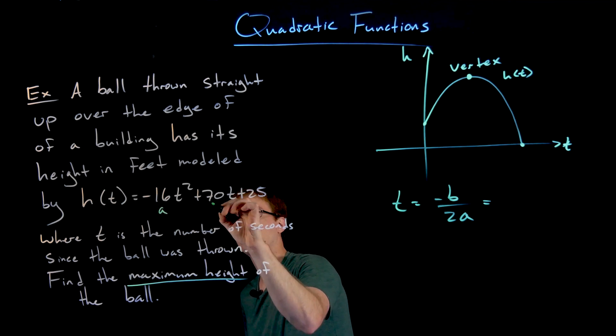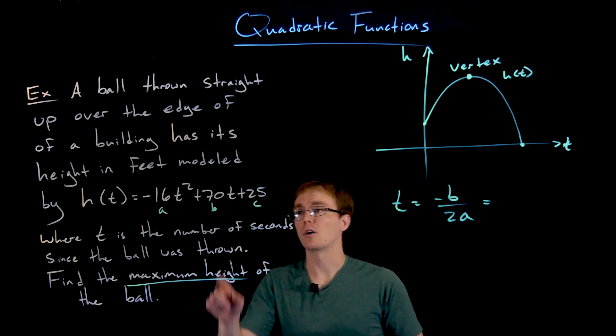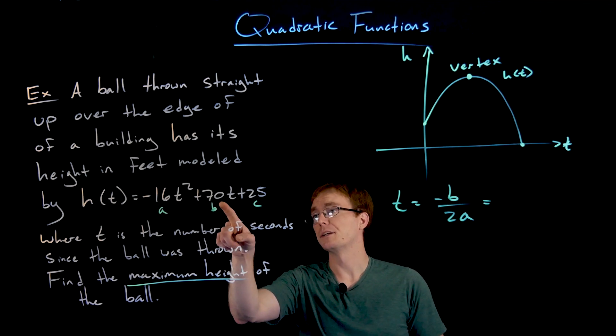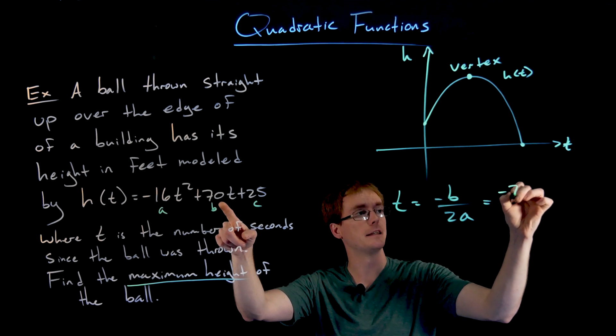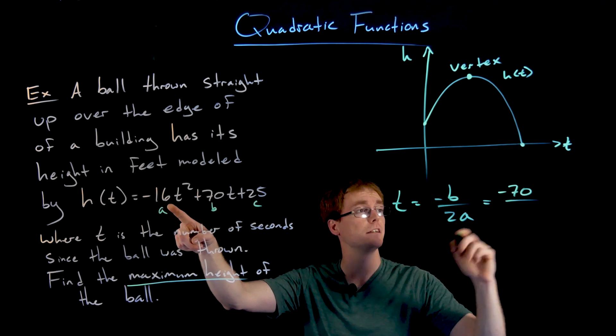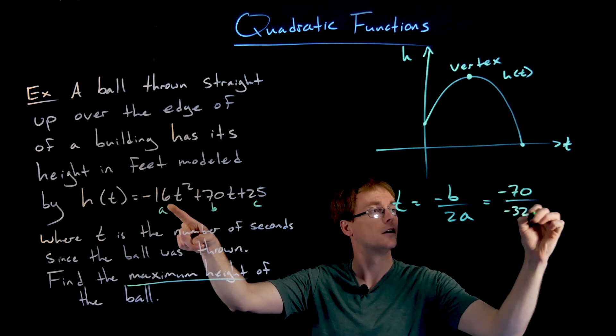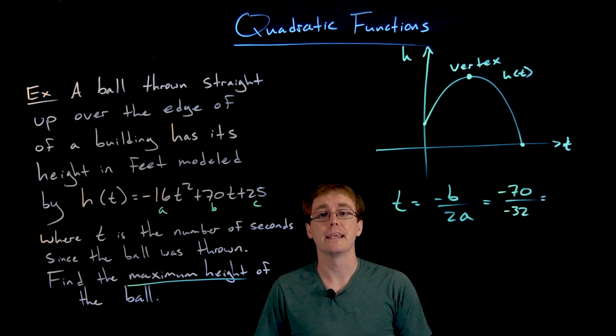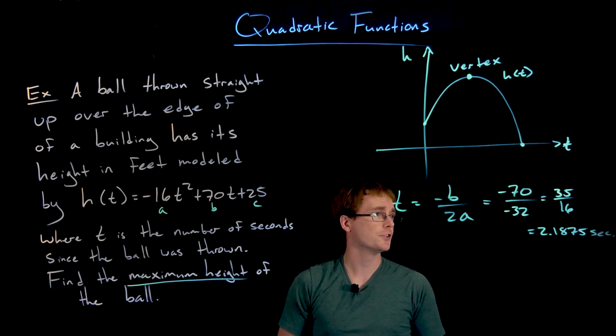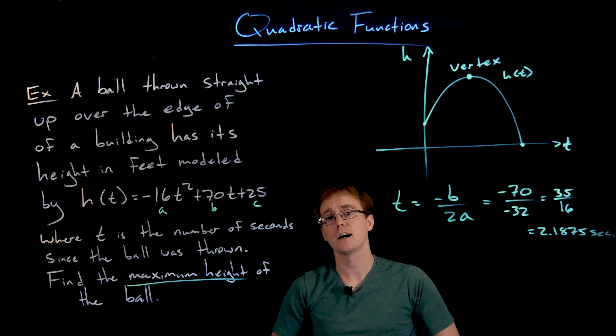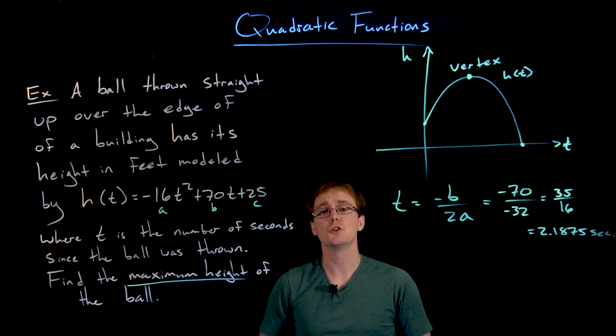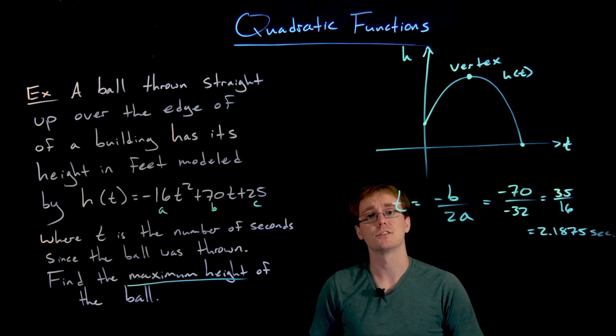Remember a is our leading coefficient, b is our linear coefficient, and c is our constant term. Our -b value is -70. Our a value is -16. So 2 times our a value is -32. We simplify our fraction: -70/-32 is equivalent to 35/16, or as a decimal that's 2.1875 seconds.